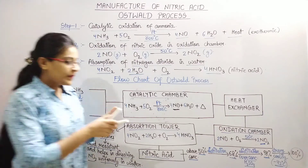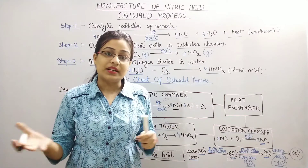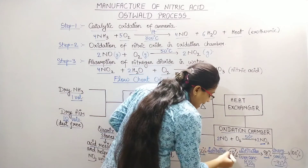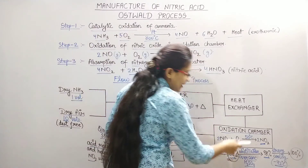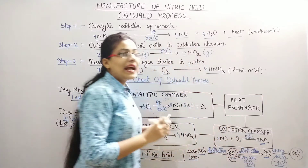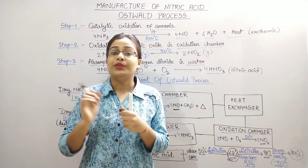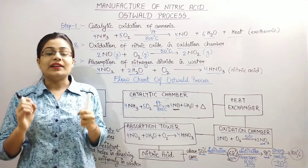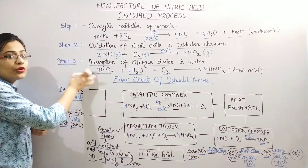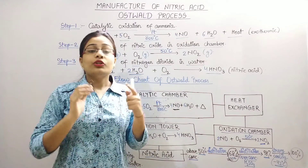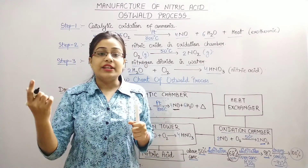This gives 68% concentrated Nitric Acid, which is commonly used. For further concentration, further distillation is done with concentrated Sulfuric Acid to get 98% concentrated Nitric Acid. When cooled to minus 42 degrees Celsius, 100% pure concentrated Nitric Acid is formed.